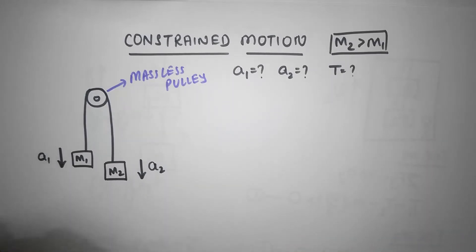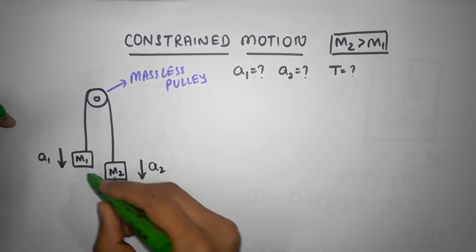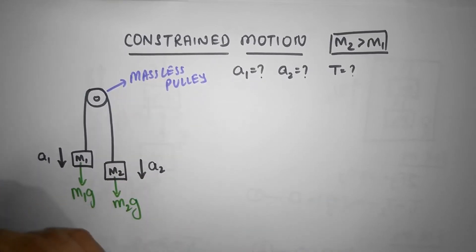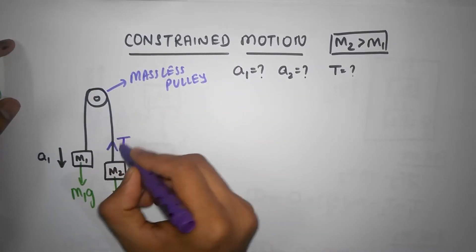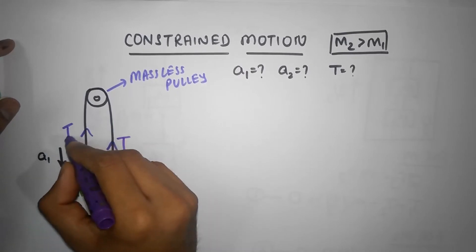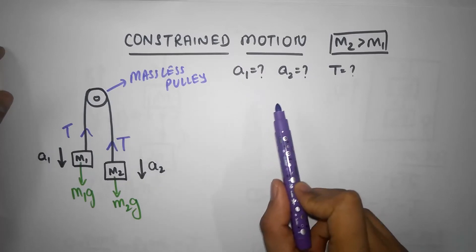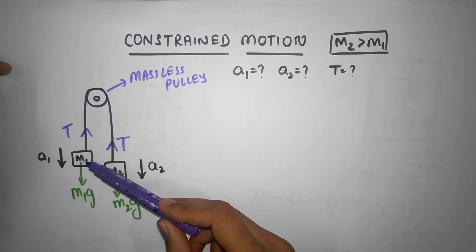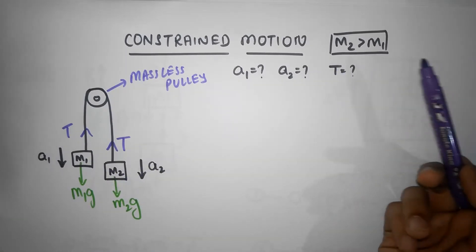Let's write down the forces we have. M2g acting downwards here, we have M1g acting downwards here, and there must be tension force acting. And remember, it's the same string so the tension force must be the same in both the strings. All right, now to solve this we need three equations because there are three unknowns. But we can make an equation for M1 and we can make an equation for M2. Where do I get the third equation from?